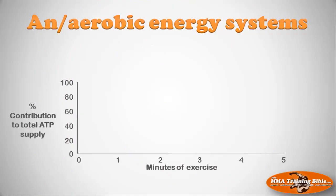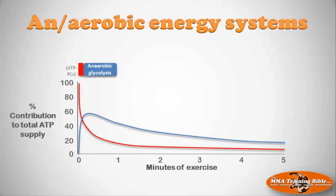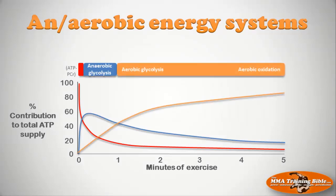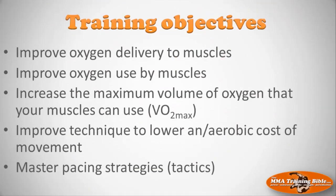Let's look at the contribution of all these energy systems to ATP production during a five-minute MMA round. The ATP-PCR system doesn't contribute much, and anaerobic glycolysis still doesn't contribute much, but what really kicks in for most of those five minutes is aerobic glycolysis and aerobic oxidation. That's why the aerobic energy systems dominate mixed martial arts. The crossover point is around 75 seconds or so — MMA is definitely a sport dominated by aerobic energy systems.